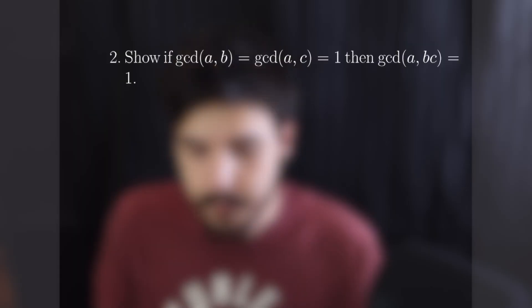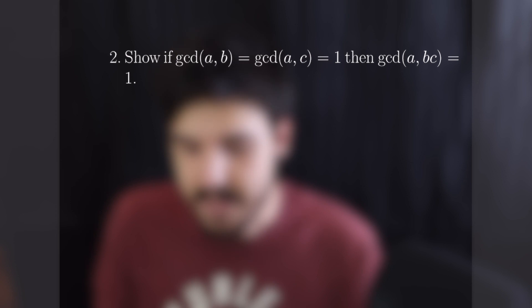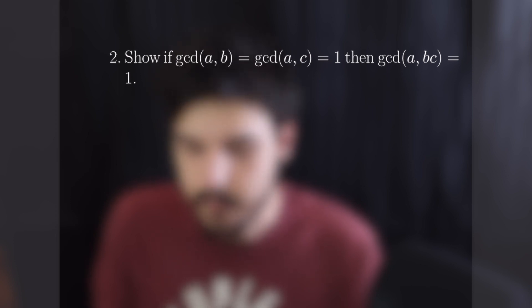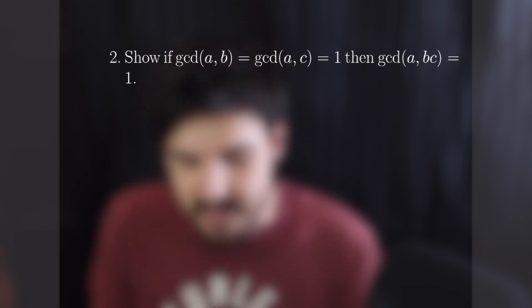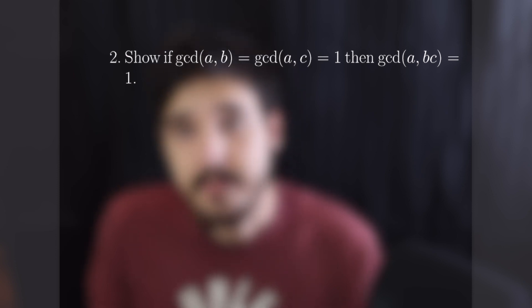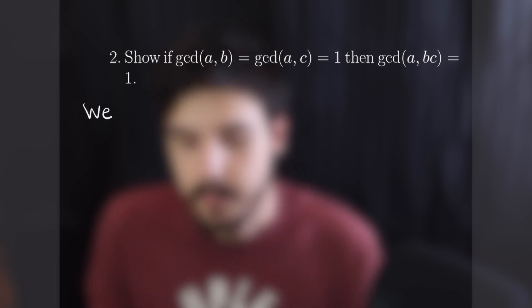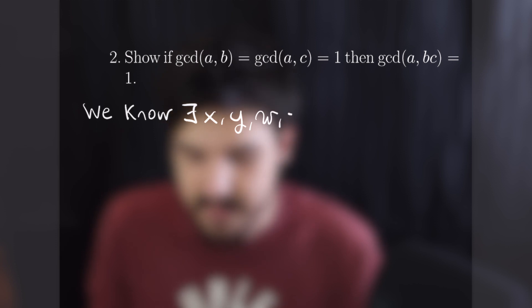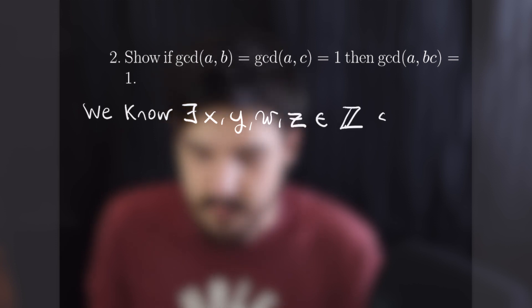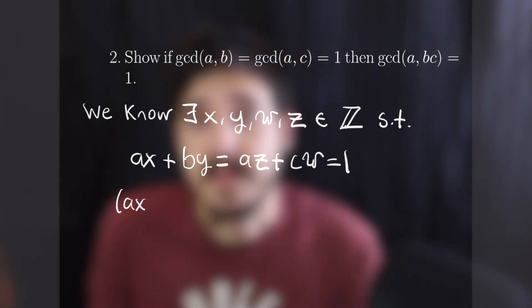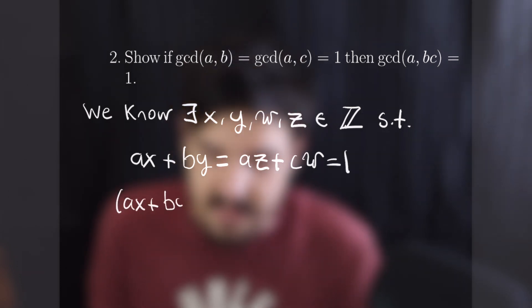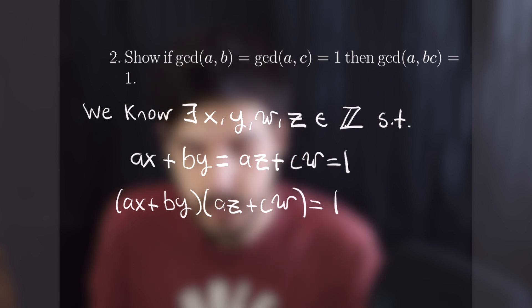For problem 2, we want to show that if GCD(a, b) = GCD(a, c) = 1, then GCD(a, bc) = 1. From these GCD definitions, we know there must exist integers x, y, w, and z such that ax plus by equals 1 and az plus cw equals 1. From here, we can multiply these two equations to get (ax plus by)(az plus cw) equals 1, since 1 times 1 is 1.